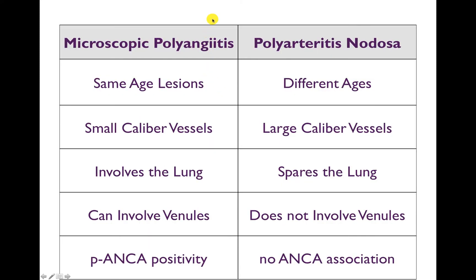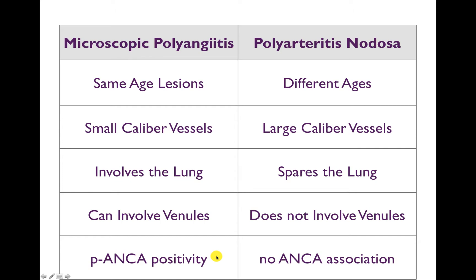There are two key contrasts to draw. First, microscopic polyangiitis versus polyarteritis nodosa — these were thought to be one disease until the 1940s-50s. In microscopic polyangiitis, lesions are typically the same age; in polyarteritis nodosa, lesions can be of different ages. Microscopic polyangiitis involves small caliber vessels; polyarteritis nodosa involves larger caliber vessels. Microscopic polyangiitis involves the lung; polyarteritis nodosa spares the lung. Microscopic polyangiitis can involve venules; polyarteritis nodosa does not. Finally, microscopic polyangiitis has P-ANCA positivity, whereas polyarteritis nodosa has no ANCA association.